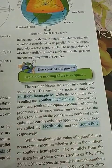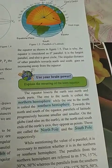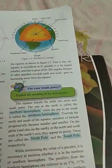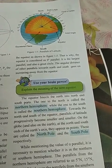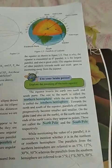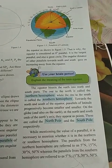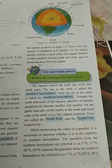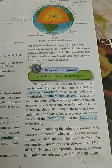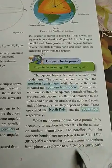The equator divides the earth into north and south parts — the one to the north is called the Northern Hemisphere, and the southern side is called the Southern Hemisphere. Towards the north and the south of the equator, parallels of latitude progressively become smaller and smaller on the globe. At the north and south ends of the earth's axis they appear as points — these are called the North Pole and South Pole respectively. When mentioning the value of a parallel it is necessary to state whether it is in the Northern or Southern Hemisphere. The northern parallels are referred to as 5°N, 15°N, 30°N, 50°N, while southern parallels are 5°S, 15°S, 30°S, and 50°S — both sides have the same parameter values.